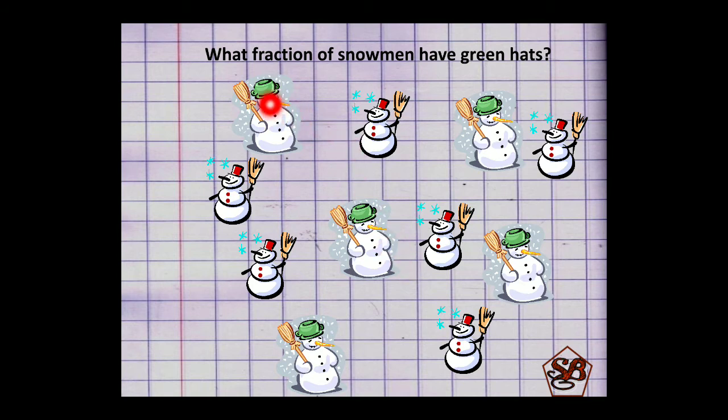Here is another example. What fraction of snowmen have green hats? Now to find the fraction first we will find out the total number of snowmen: 1, 2, 3, 4, 5, 6, 7, 8, 9, 10 and 11. So in all there are 11 snowmen. And the ones who are wearing green hats are 1, 2, 3, 4 and 5. So 5 is our numerator and denominator is 11. And the fraction is 5/11.